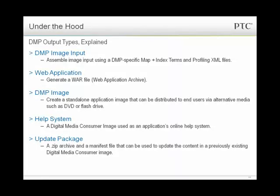What are these inputs? The image input is where you assemble your content and XML content using a DMP map, along with any index terms, profiling, and metadata you want associated with that map. You can generate just a WAR file — a standalone one-shot file you can post out to a servlet server like Tomcat. The DMP image is really for standalone application images that you'd want to distribute via alternative media such as DVD or flash drive.